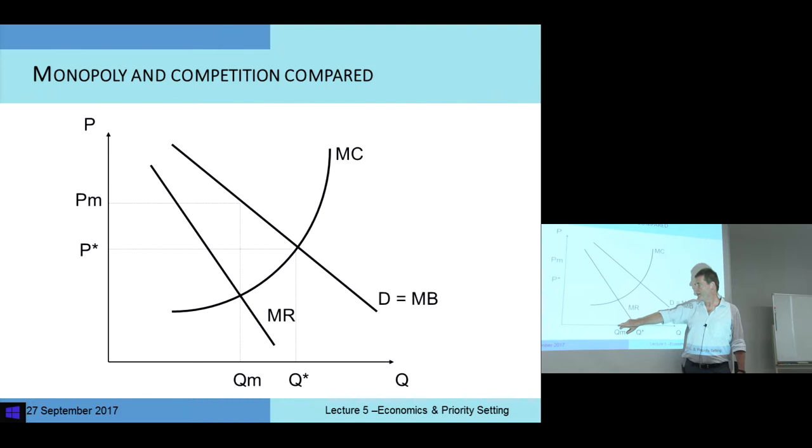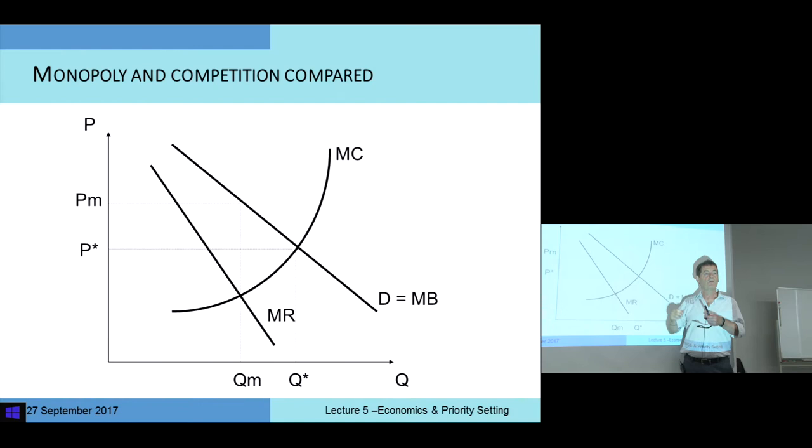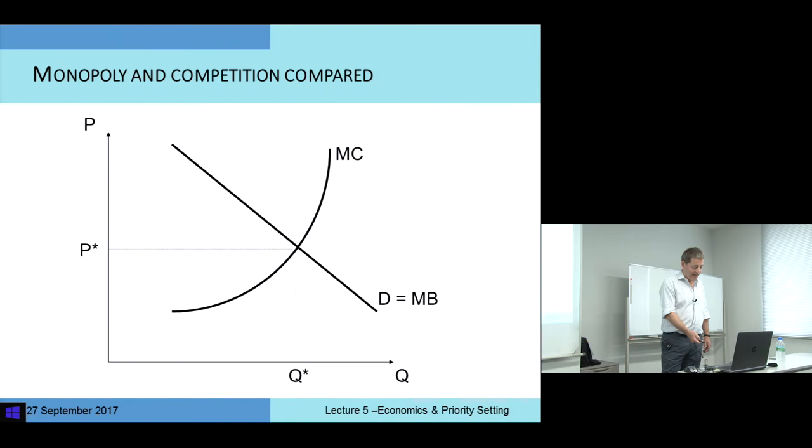This has a familiar ring — the idea that monopolists charge high prices. Compared to the competitive situation of P-star, we've got a higher price PM. What the monopolist does is restrict the quantity, and that pushes up the price. This is rather bad for society, arguably.